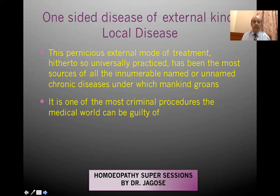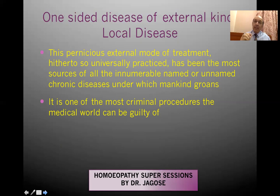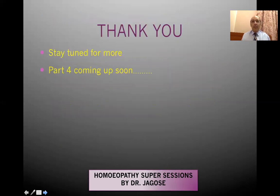This pernicious external mode of treatment — which has been so universally practiced — is the most fruitful source of innumerable named or unnamed chronic diseases under which mankind groans. It is one of the most criminal procedures the medical world can be guilty of, because suppression causes disease to move from the periphery to the center of the body, creating more and more chronic diseases. That's all — I hope it's become very clear how to treat local disease and the difference between local disease and local maladies. Part 4 will be coming up soon. Thank you.